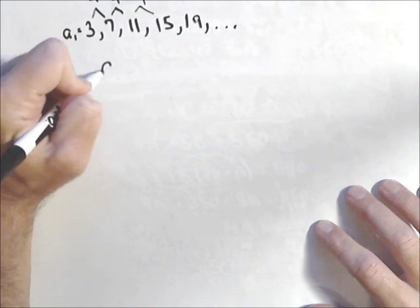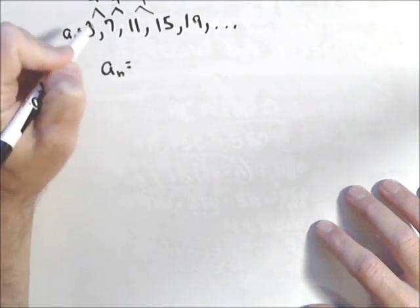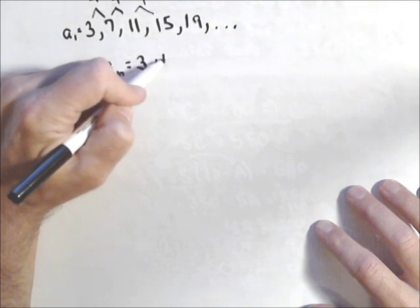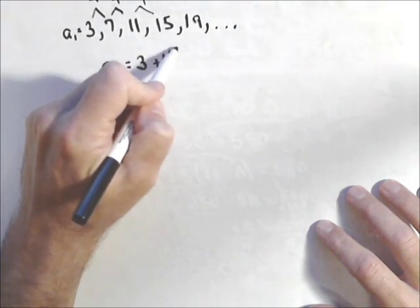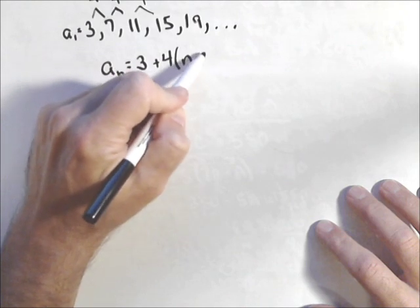So when we're looking for the nth term, we know it starts at 3, and it goes up 4 each time, so it's like a linear function. The only difference, instead of multiplying by n, we're going to multiply by n minus 1.